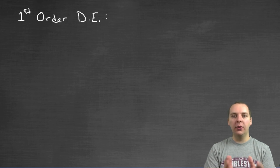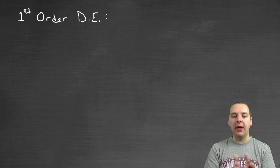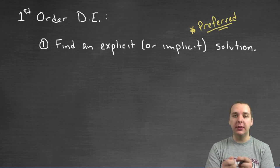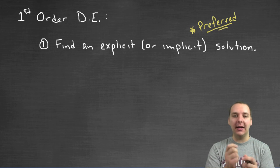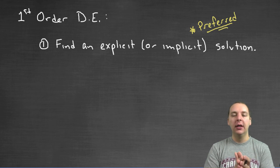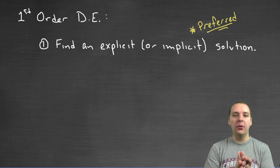If we're given a first order differential equation, we have a couple of different options of how to handle it. Our preferred method would be to find an explicit or an implicit solution — that's what we call solving it, we get the exact solution. However, that's not always possible. Some differential equations are very difficult to solve, or some of them are impossible to solve.